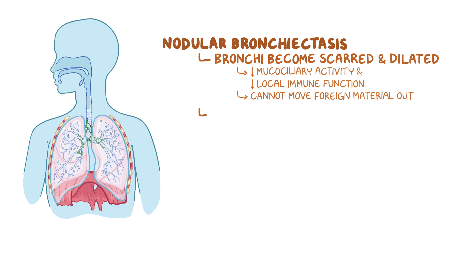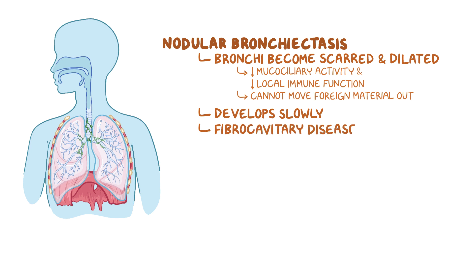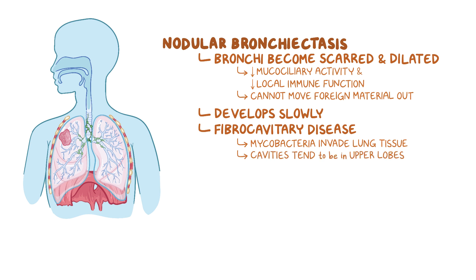Nodular bronchiectasis tends to develop slowly, but in some cases the more aggressive and severe fibrocavitary disease occurs. Here, the mycobacteria invades the lung tissue, causing damage, severe fibrosis, and formation of cavities, much like tuberculosis. Since MAC are aerobic organisms, these cavities tend to be in the air-rich upper lobes of the lung.